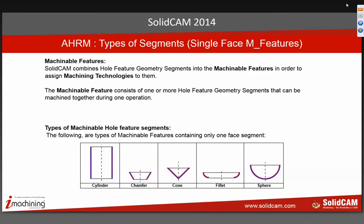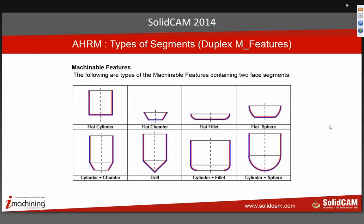As we talk about the types of segments in an M Feature or machinable feature, the system works with singular face features or duplex face features. A singular face feature is a single face geometry by itself — for instance, a cylinder, an open chamfer, or a cone. Duplex features include things like a cylinder with a flat bottom, a chamfer with a flat bottom, a cylinder with a chamfer at the bottom, or a fillet at the bottom. The system combines two segments into a feature machinable with a single tool.